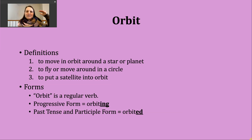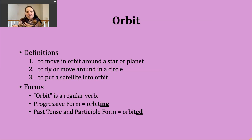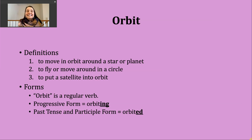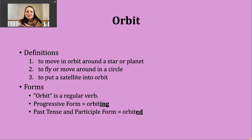That first definition I very much think of as relating to space. The second one I would think of as more closely related to things on Earth — just describing that process of moving around in a circle. A third way you might hear orbit used is to mean to put a satellite into orbit. This third definition connects to our first one — again, something in outer space.